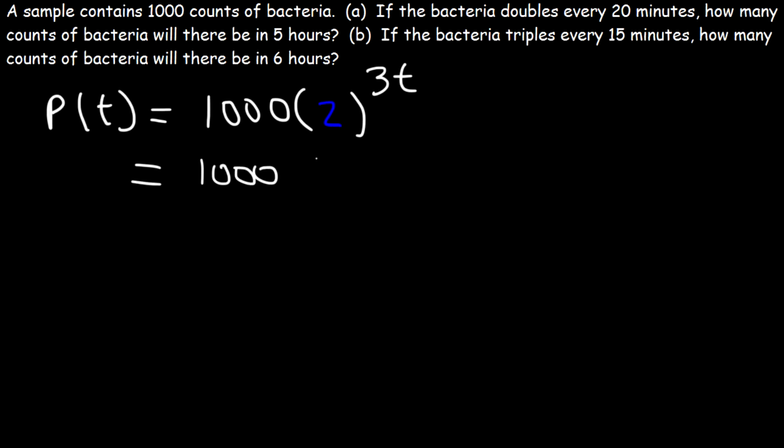So that's the equation that we need where T is in hours. So now all we need to do is replace T with 5. So if it doubles three times in one hour, it's going to double 15 times in 5 hours. So it's 2 to the 15 times 1,000. And it's going to be equal to a big number. 32,768,000.